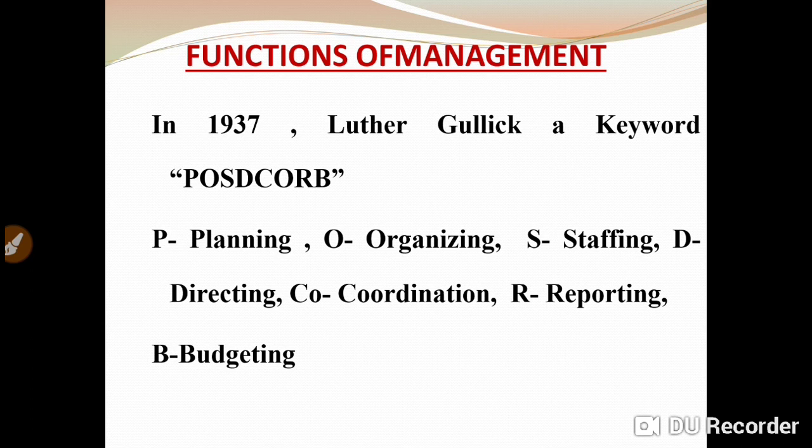In 1937, Luther Gulick gave a keyword called POSDCORB. P refers to Planning, O refers to Organizing, S refers to Staffing, D is Directing, C-O refers to Coordination, R refers to Reporting, and B refers to Budgeting. So Luther Gulick gave this acronym POSDCORB. Now let's start with our Functions of Management.